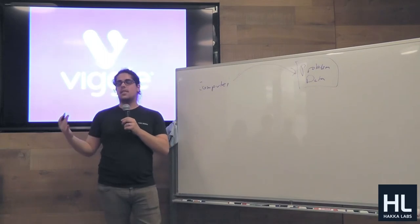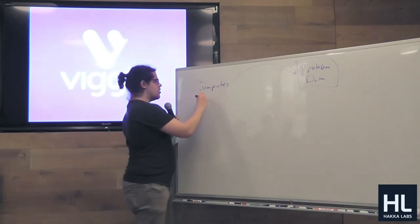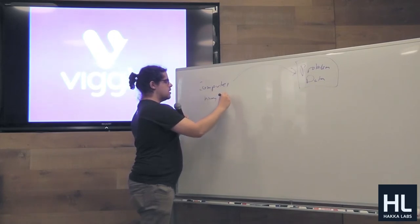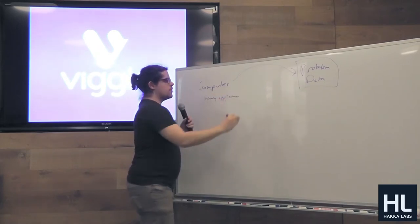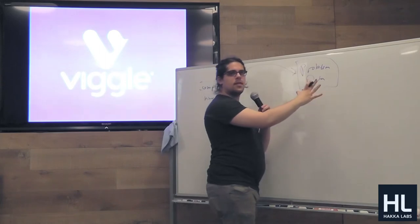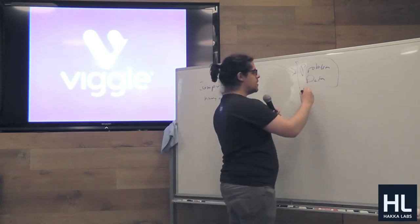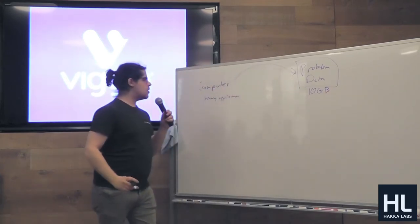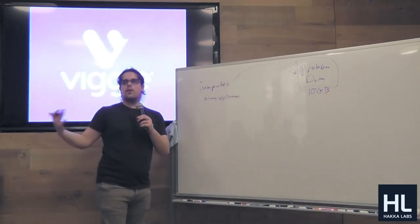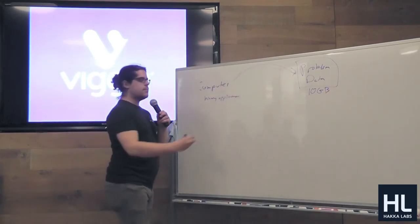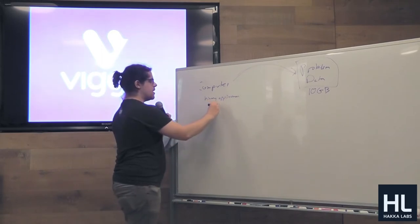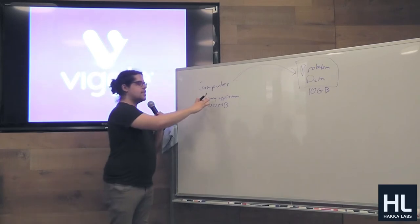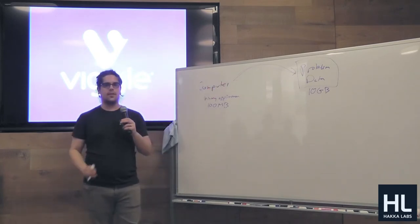In Hadoop's model, our program is a binary application. The win here was that our problem data kept getting bigger and bigger — maybe 10 gigabytes — but applications, even really big ones, are maybe 100 megabytes. So it was more efficient to send our program over to the data.